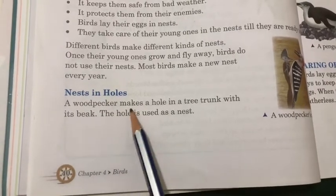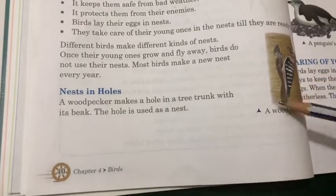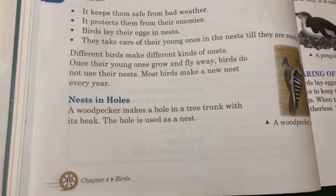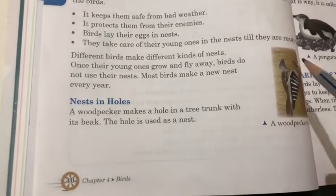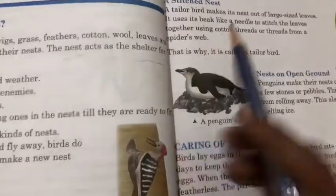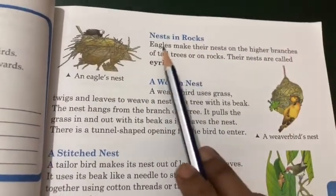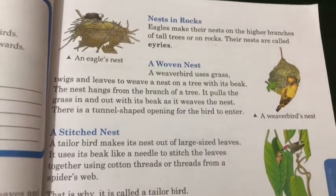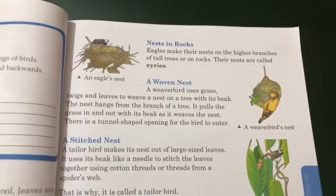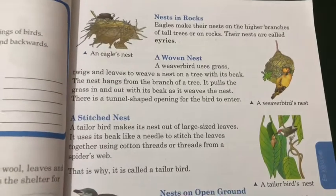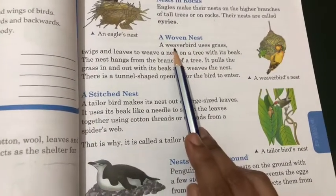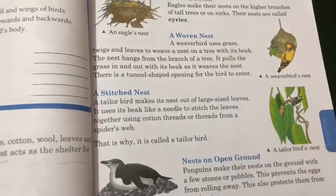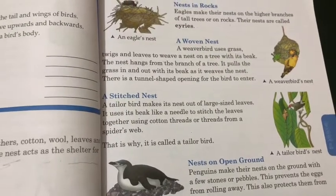Nest in holes: A woodpecker makes a hole in a tree trunk with its beak, which is used as a nest. Nest on rocks: Eagles make their nests on the higher branches of trees and on rocks. A woven nest: A weaver bird uses grass, twigs and leaves to weave a nest on a tree with its beak.